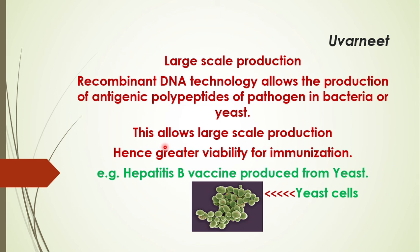With advancements in biotechnology, large-scale production of any vaccine is now possible using recombinant DNA technology. This allows production of antigenic polypeptides of the pathogen using bacteria or yeast, since yeast and bacteria multiply very fast. This enables large-scale production and greater viability for immunization. For example, the hepatitis B vaccine is produced from yeast, and we are now able to easily neutralize that disease.